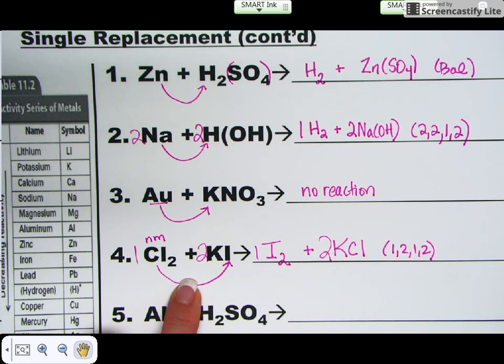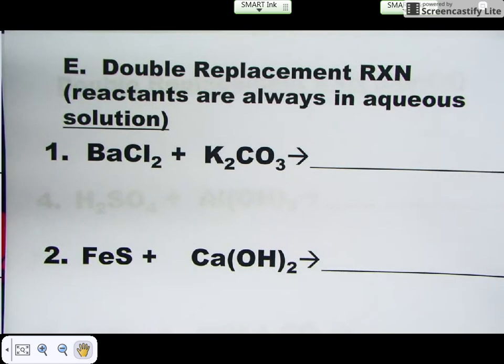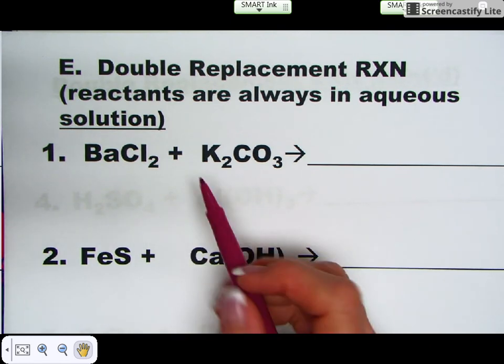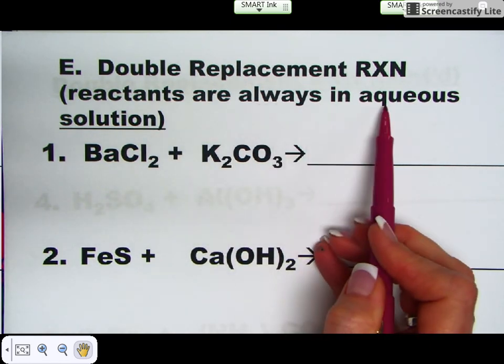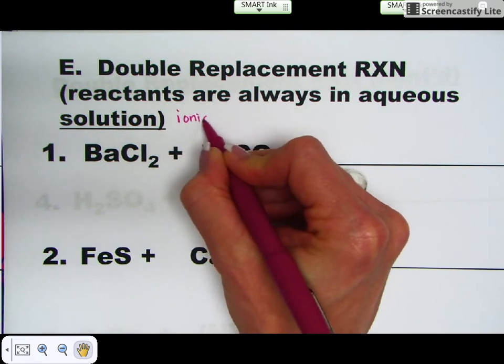All right. So that's what we talked about in class today. That's the single replacement reactions. Let's move on to our double replacement reactions. You do not need to consult your activity series for your double replacement reactions. These reactants are always going to be in aqueous solution. And they're always going to be ionic compounds.